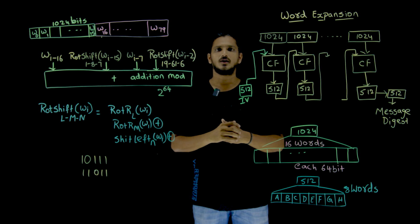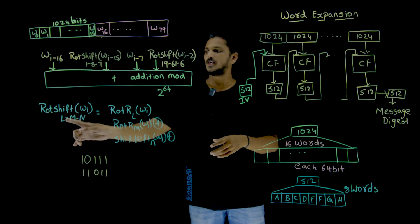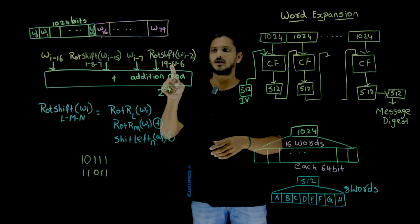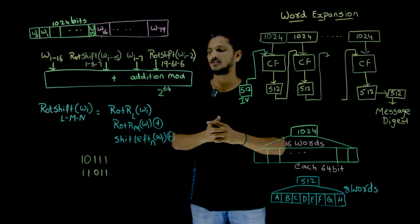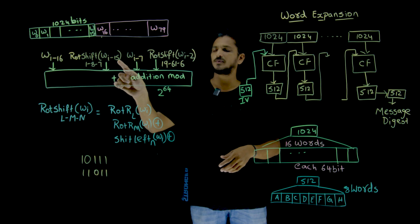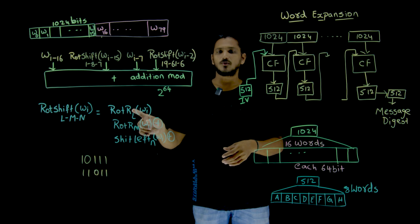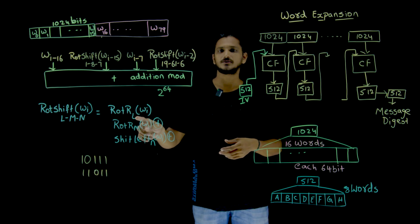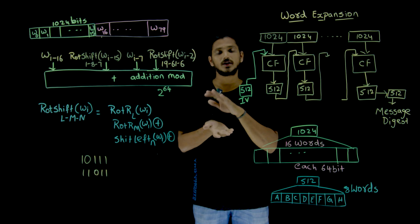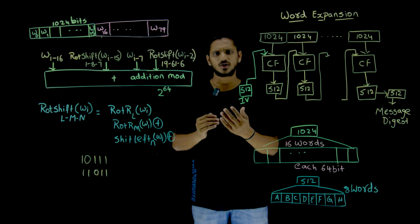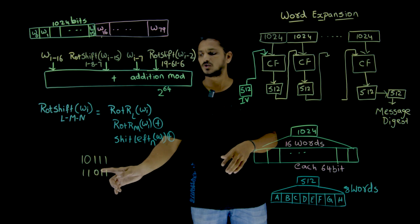Now let's understand the rotate-shift function. Rotate-shift of wi with parameters (l, m, n): for σ0, l=1, m=8, n=7; for σ1, l=19, m=61, n=6. Take the word — for example w1 — and perform a circular right rotation l times. With l=1, the word is circularly right-rotated one time: e.g., 1 0 1 1 1 becomes 1 1 0 1 1.